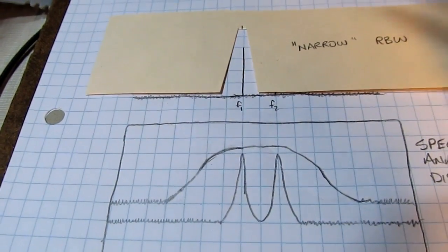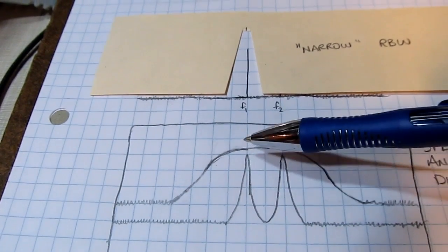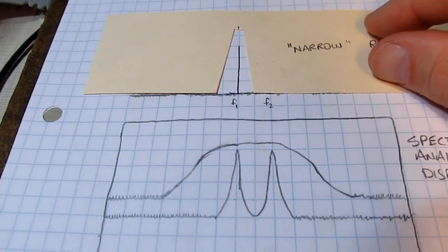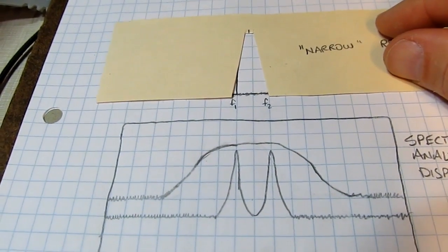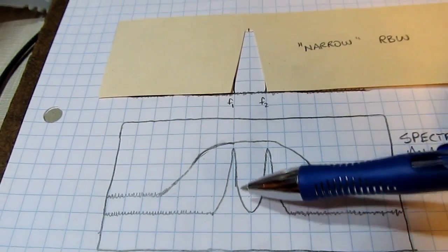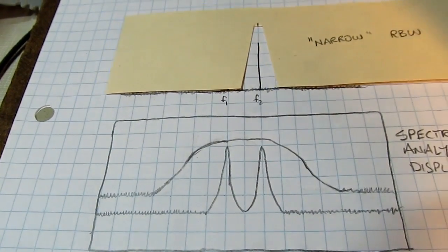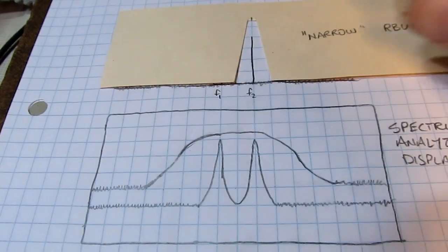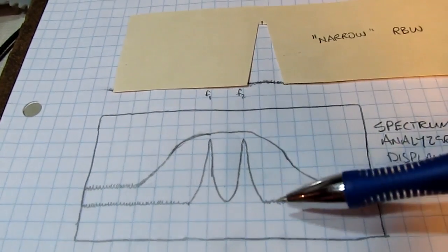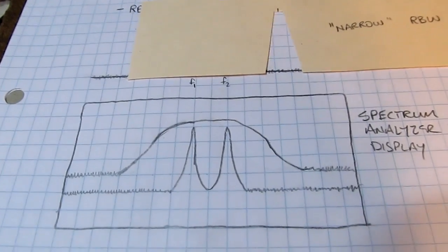As we sweep this across we start to see tone one so we've integrated that power we can see tone number one. Tone two is still blocked by the filter. If we keep going in between those two tones we essentially are not measuring any power in there now. And we keep going again, we've got tone two in here.